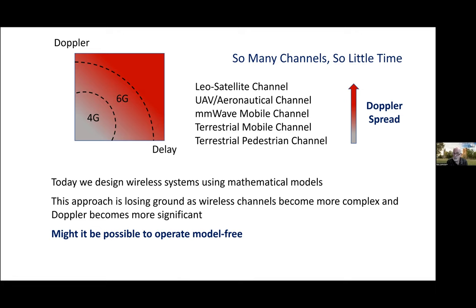Seven and a half kilohertz for planes, and maybe 80 kilohertz for random access with satellites. So I want to explore the proposition that the standard model-dependent approach to wireless communication is starting to break down as channels become more complex and Doppler becomes more significant.